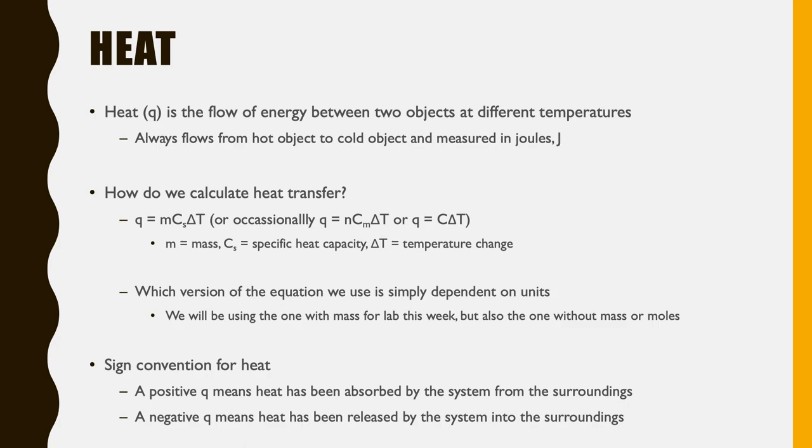Heat has a sign convention — whether Q is positive or negative actually matters. That's why delta T must be final minus initial; changing that order affects the sign. A positive Q means heat is moving into your system. A negative Q means whatever you're looking at has lost heat, which is being released into the surroundings.